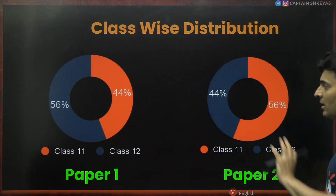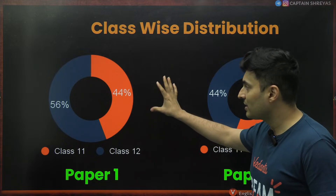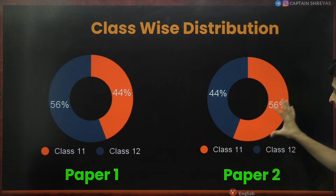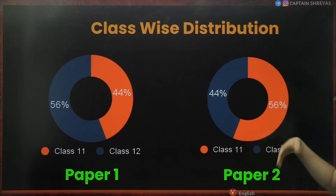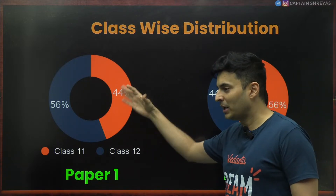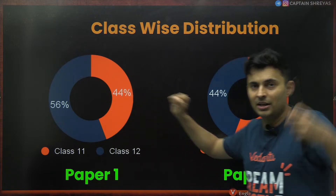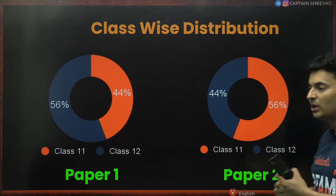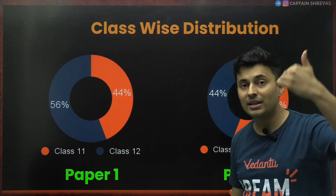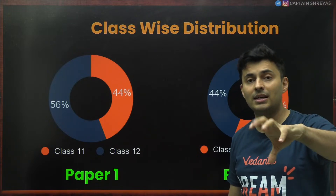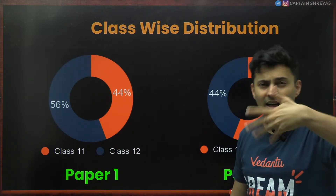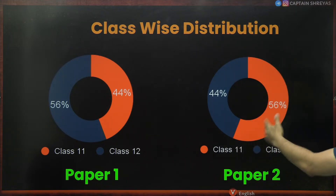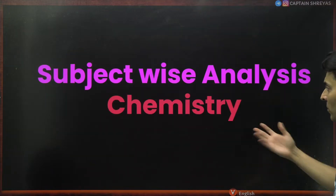Looking at class-wise distribution: in Paper 1, around 44% was from Class 11, and in Paper 2, Class 11 content jumped to 56% — which is significant. Students who thought Paper 1's lower Class 11 percentage would continue were in for a shock. This added difficulty because some students had forgotten Class 11 concepts, as most other entrance exams are biased toward Class 12 syllabus.